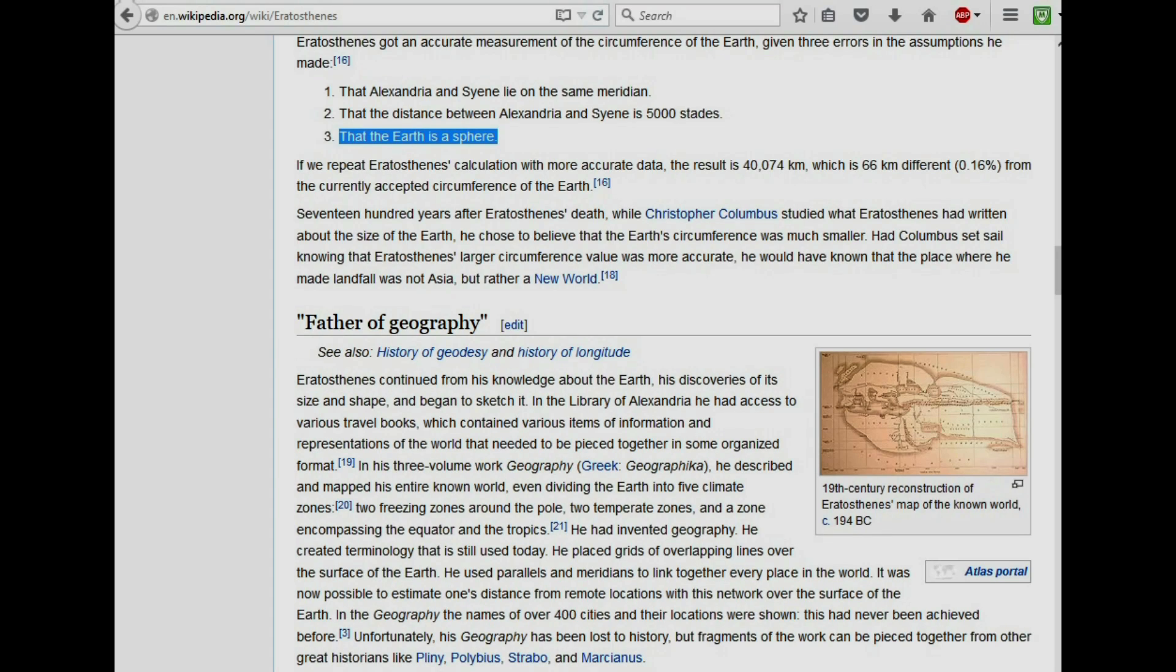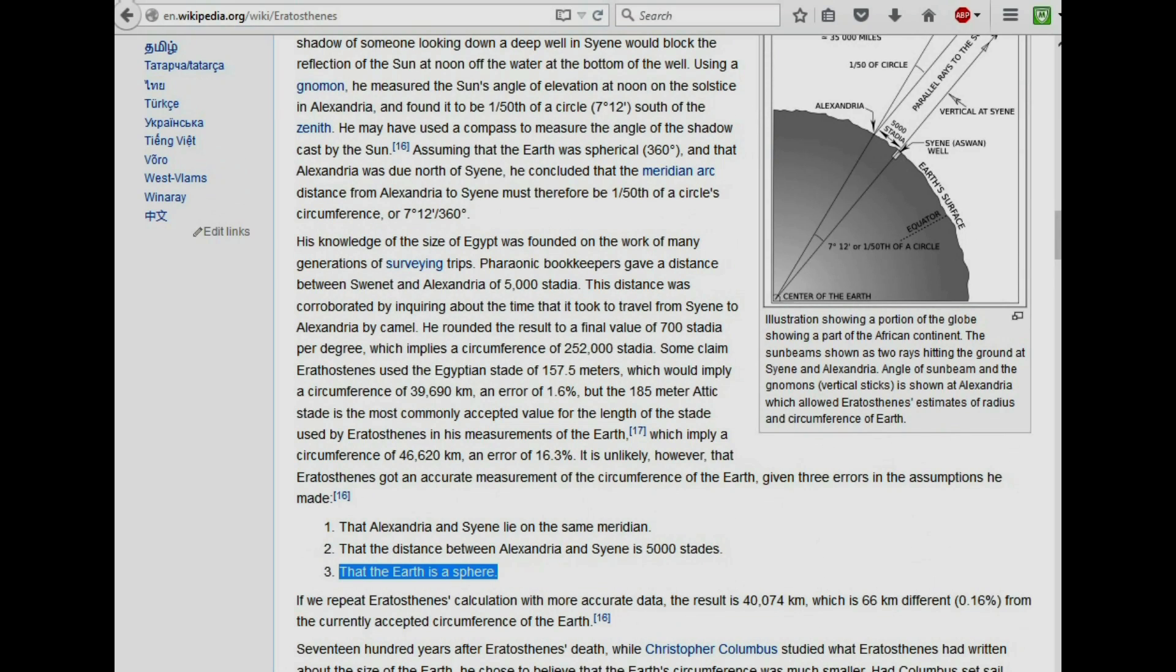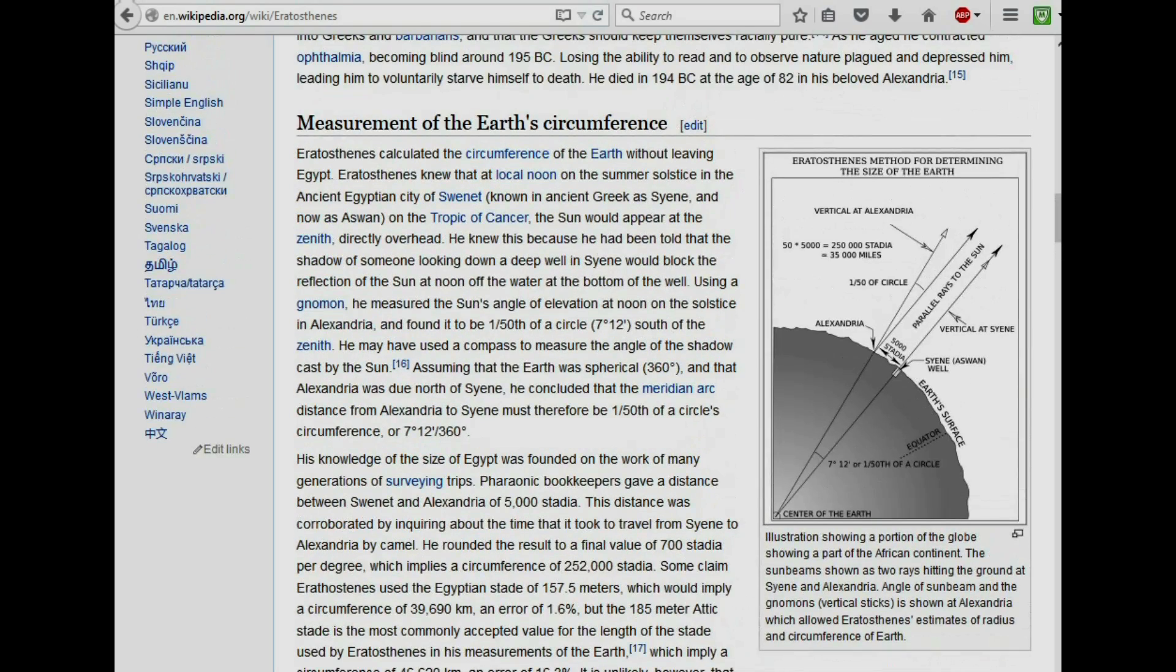Because apparently he was quite into geography. Eratosthenes says here, for instance, Eratosthenes continued from his knowledge about the Earth, his discoveries of its size and shape, and began to sketch it. In the Library of Alexandria, he had access to various travel books. Now I'm sure through documentaries that I've watched that the Library of Alexandria had a great big fire or it was destroyed, and an awful lot of the artifacts or the books and papers and everything that was inside were destroyed.